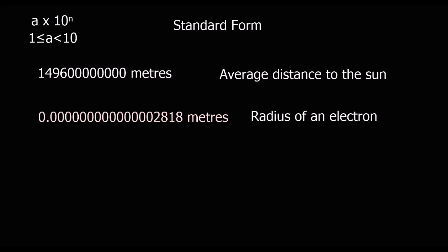Sometimes in maths or science we get really, really big numbers or really, really small numbers. Here we've got the average distance to the sun as 149.6 billion metres. So instead of writing out that whole number, what we can do is write it in what's called standard form — that is a number between 1 and 10 times 10 to a power.